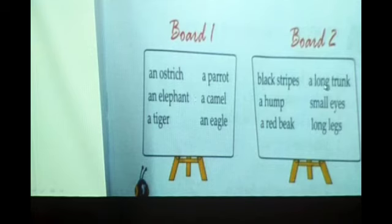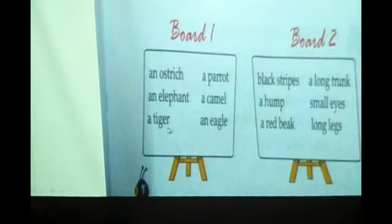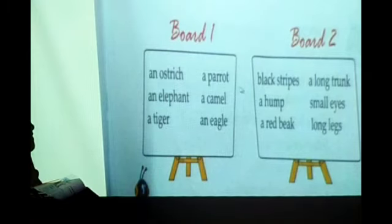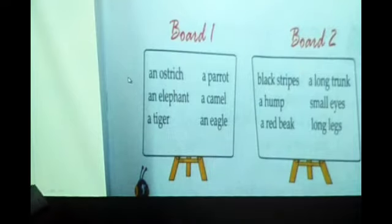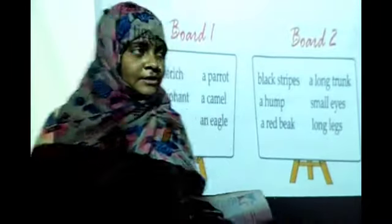You can ask like: what does an ant have? An ant has a long trunk. Next — a camel: what does a camel have? A camel has a hump, or a long neck. Next — a tiger: what does a tiger have? A tiger has black stripes. Like this, you can ask questions and the other person should answer.